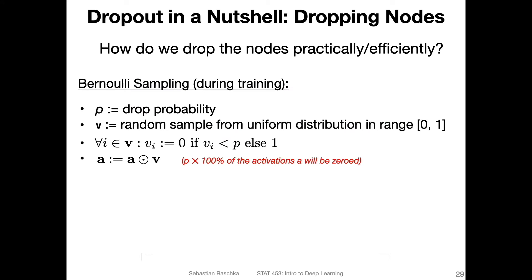Why that is useful—there are a couple of theories. We'll talk about this, but here is just the big picture overview of what's happening. The question is, how can we implement that efficiently? How can we implement dropout without having to make major modifications to our neural network architecture? One way would be by implementing a Bernoulli sampling procedure.